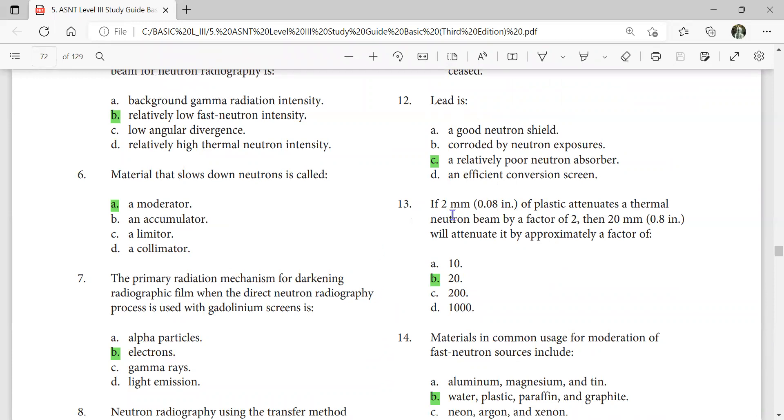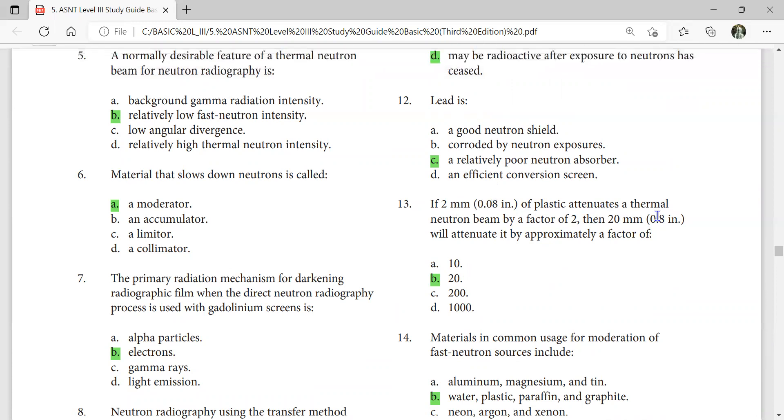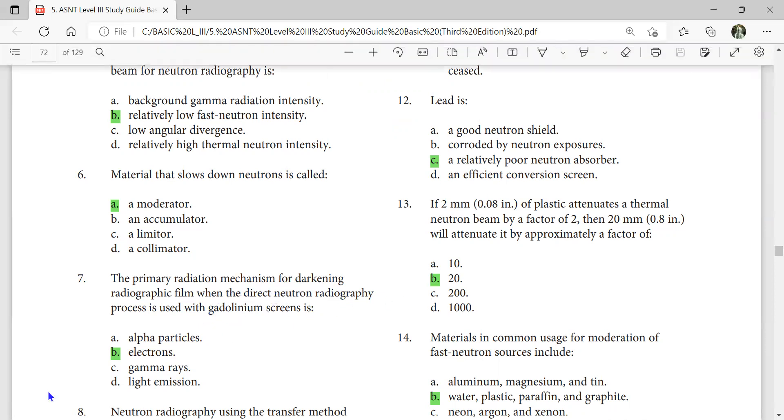A 2 millimeter (0.08 inch) of plastic attenuates a thermal neutron beam by a factor of 2, then 20 mm will attenuate it by approximately a factor of... The primary radiation mechanism for darkening radiographic film when the direct neutron radiography process is used with gadolinium screen is electrons, because when neutrons come to gadolinium screen, it emits electrons.